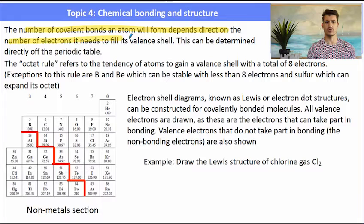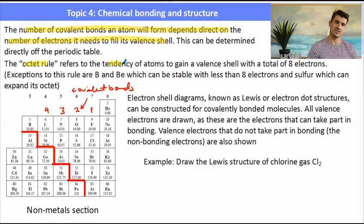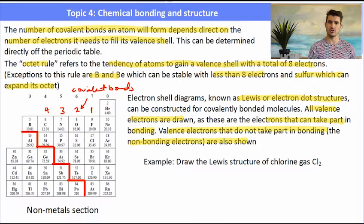The number of covalent bonds that an atom will form depends directly on the number of electrons it needs to fill its valence shell. If we look at something in group 17 — fluorine — it wants to gain one electron to have a full outer shell. Oxygen: two electrons. Nitrogen: three. Carbon: four. The octet rule refers to the tendency of atoms to gain a full valence shell with a total of eight electrons. There are a couple of exceptions: boron and beryllium want to have less than eight electrons, and sulfur can actually expand its octet to have more than eight electrons.